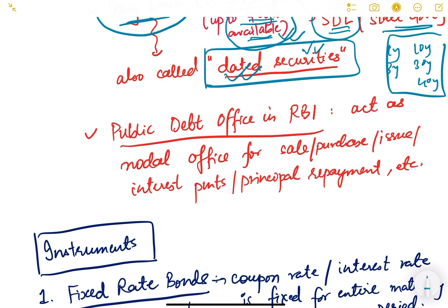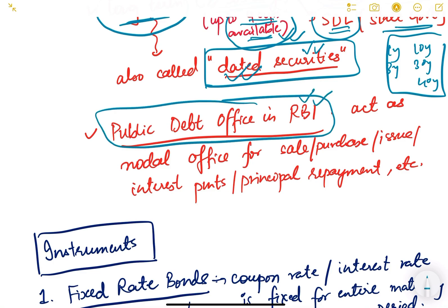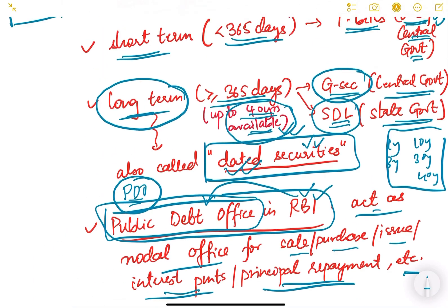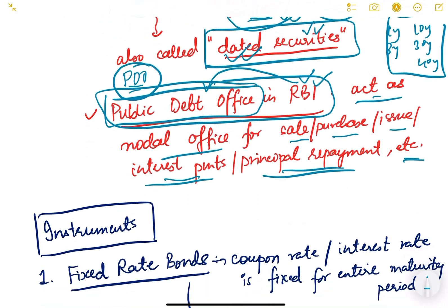Who issues these securities on behalf of the government? It is the Public Debt Office (PDO) of RBI. The PDO in RBI acts as a nodal office for sale, purchase, issue, interest payments, principal repayment, etc., for government securities and T-bills.